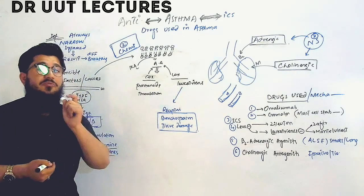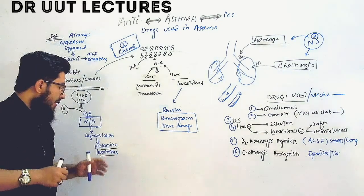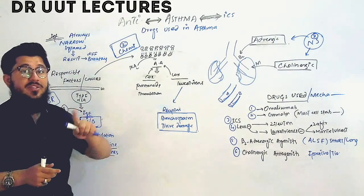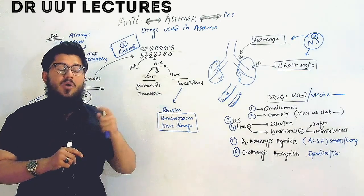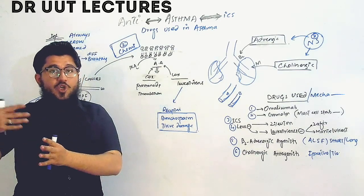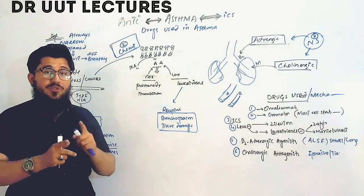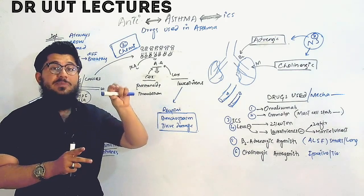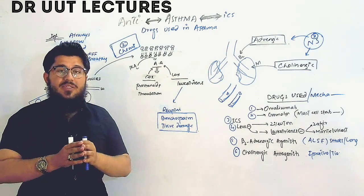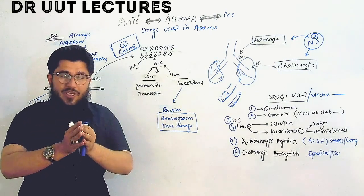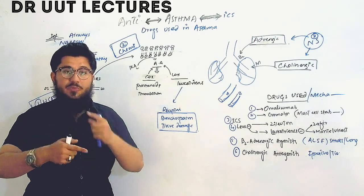The released histamines and leukotrienes are very potent factors that aggravate asthma. These chemical mediators cause bronchospasm — they decrease the diameter of the bronchioles. As the bronchioles become narrow, the air passage is reduced, making it difficult to breathe in and out.